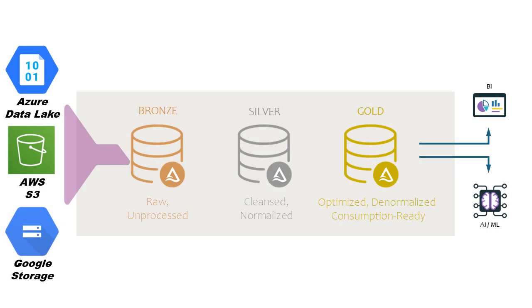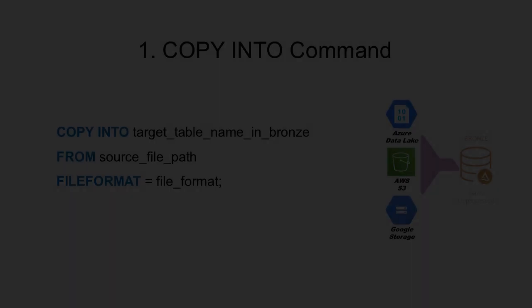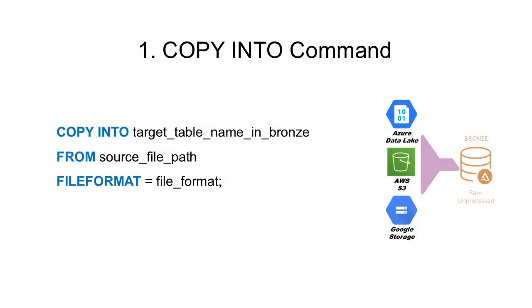In many projects, raw data is often made available in cloud storage locations like Azure Data Lake, AWS S3, or Google Cloud Storage. Data engineers build ELT pipelines to ingest this data into Databricks tables, often loading it into the bronze layer with minimal or no processing. One of the simplest methods to ingest data is using the copy into command.